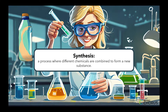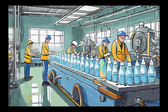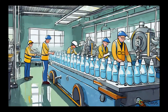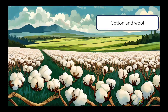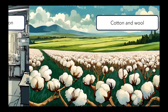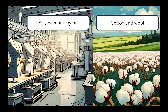To form a new substance, one example of a synthetic material is plastic. It's made from petroleum, a natural resource that comes from the earth. Through a chemical process called polymerization, petroleum is transformed into long chains of molecules that create the plastic we use in our everyday lives. Other examples of synthetic materials include polyester and nylon.